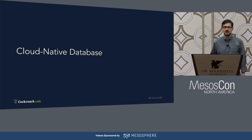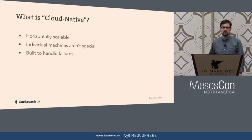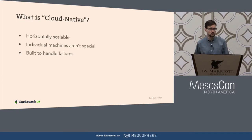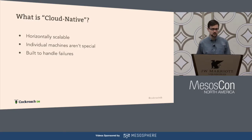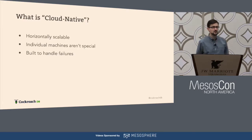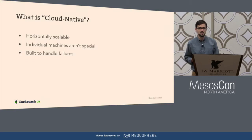So what is a cloud-native database? Cloud-native — we think of it as being a collection of features, including horizontal scalability, where you can just add new machines easily. Individual machines in the cluster aren't really special. You don't have primaries and secondaries. You don't have different kinds of replicas. And the entire system is built to handle failures transparently and provide you with continuous availability.